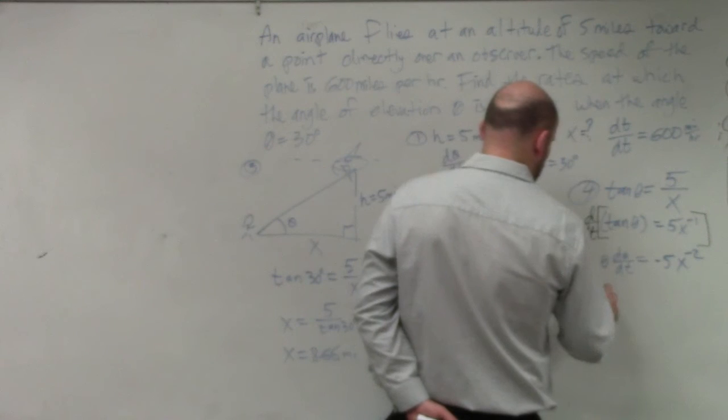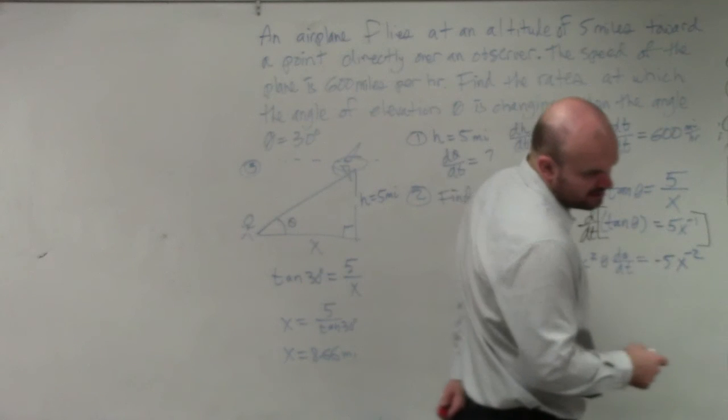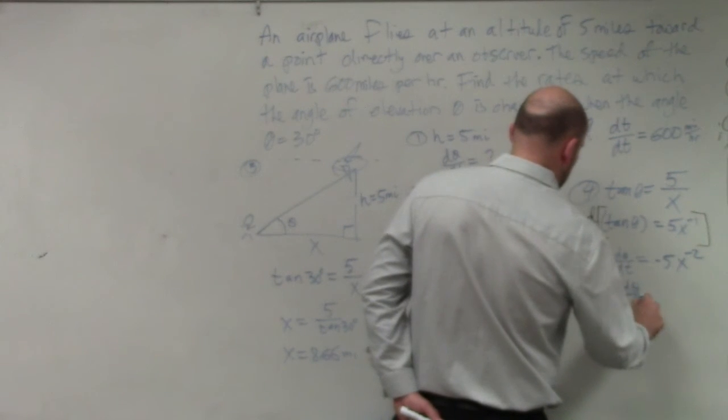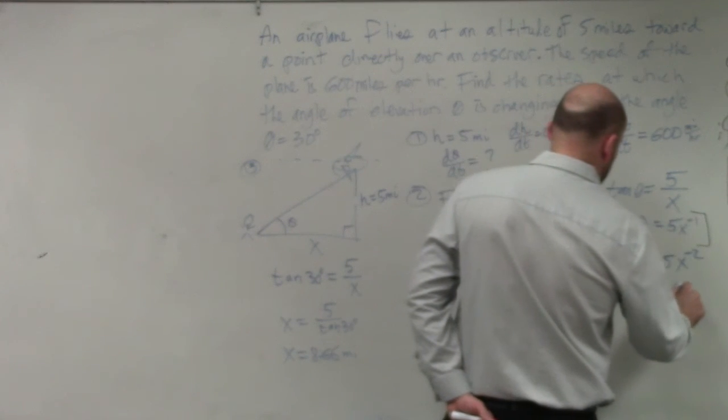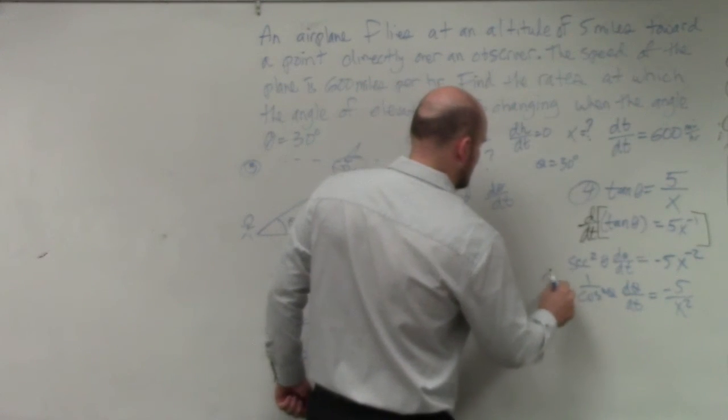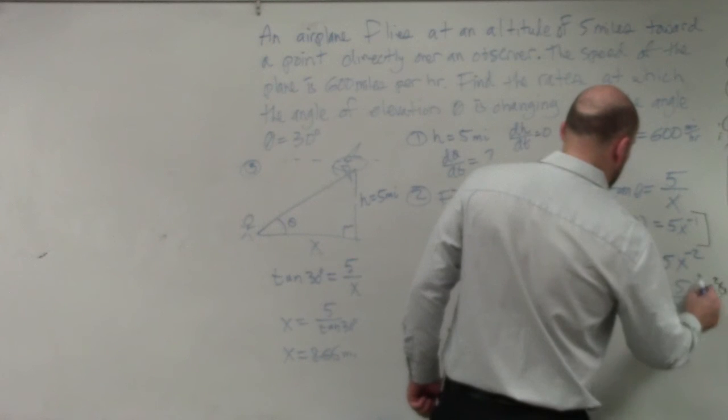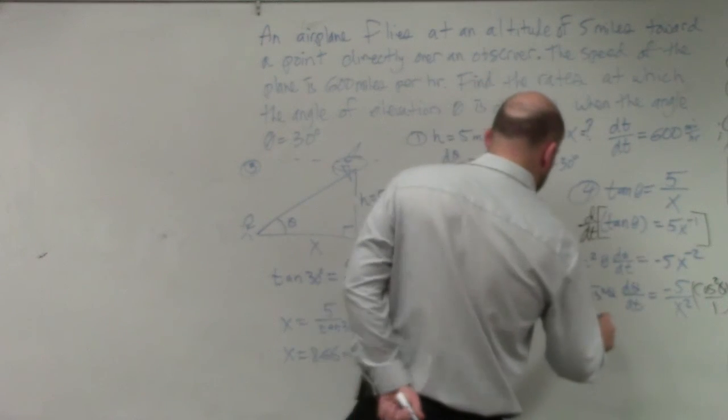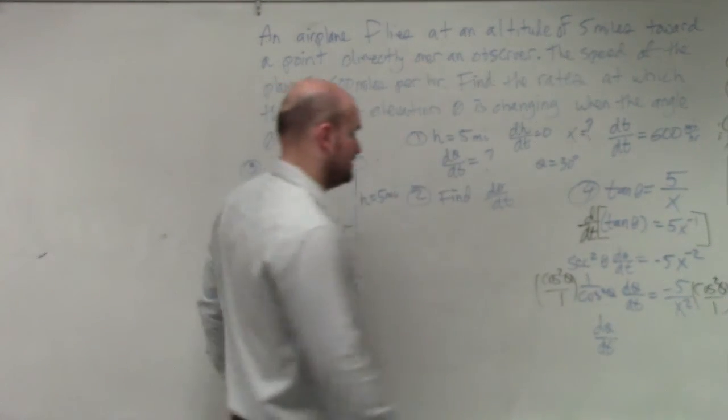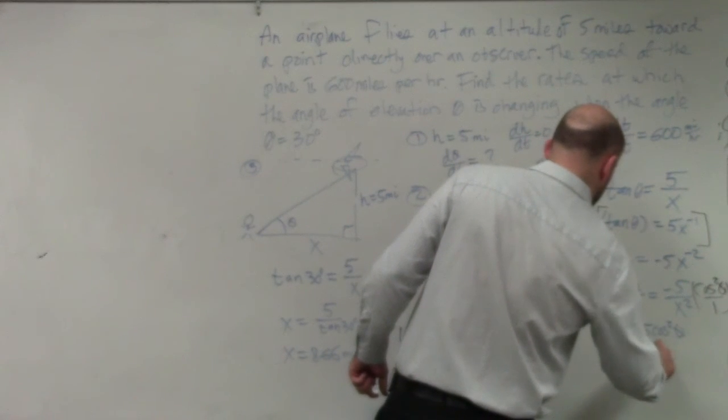But we want to find the change in the theta for our x at 30, which we haven't gotten to yet because we want to find the rate. So therefore, this becomes negative five over x squared. And therefore, secant squared of theta, d(theta)/dt equals negative five over x squared. So therefore, now I can multiply by the reciprocal of cosine squared of theta on both sides. So therefore, I have d(theta)/dt, which we are looking for, is equal to negative five times cosine squared of theta over x squared.